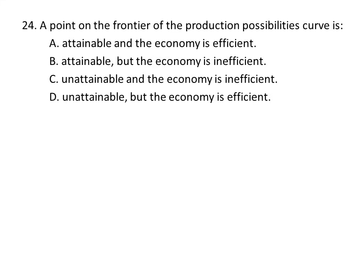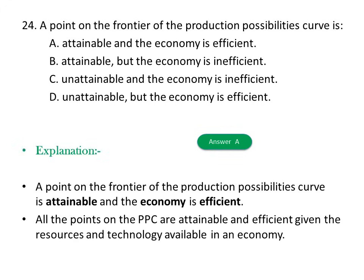Question twenty-four: A point on the frontier of the production possibility curve is: A) Attainable and economically efficient, B) Attainable but economically inefficient, C) Unattainable and inefficient, D) Unattainable and efficient. The answer is A, attainable and economically efficient. All points on the production possibility curve are attainable and efficient given the resources and technology available to an economy.